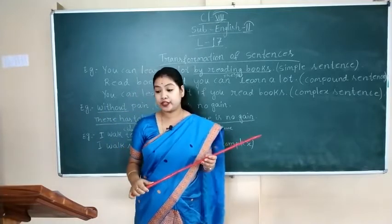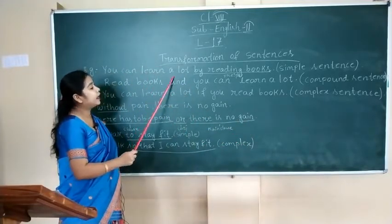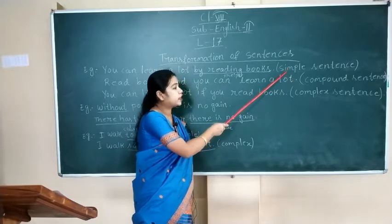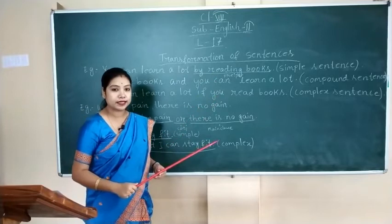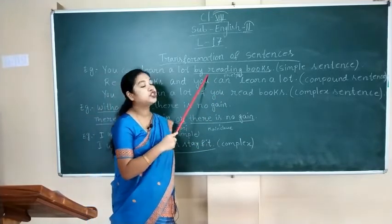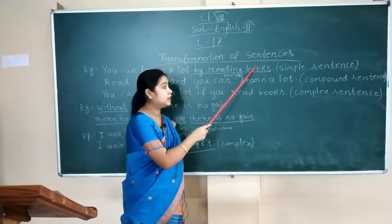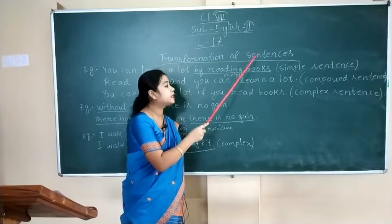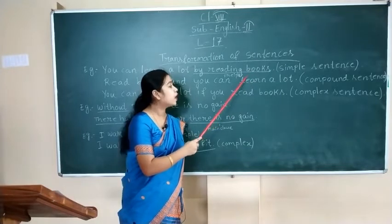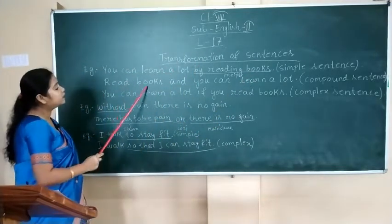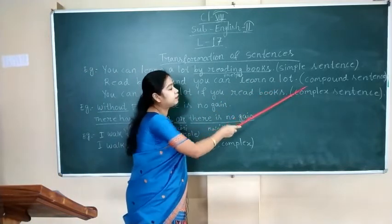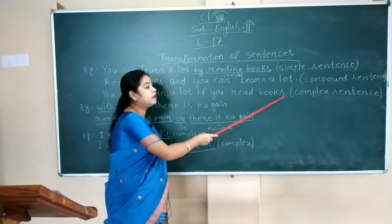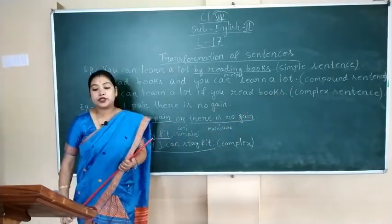Here are a few examples. The first one is: 'You can learn a lot by reading books.' This is an example of a simple sentence. In order to transform this simple sentence into compound and complex sentences, we have to expand the prepositional phrase 'by reading books.' When transformed, the compound sentence becomes: 'Read books and you can learn a lot.' The complex sentence becomes: 'You can learn a lot if you read books.'